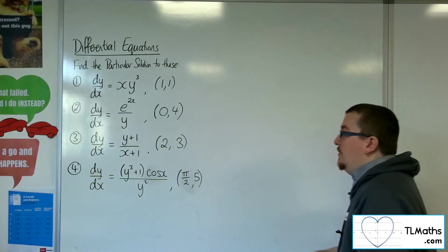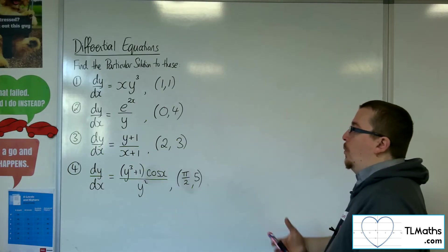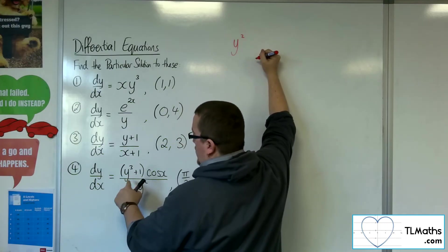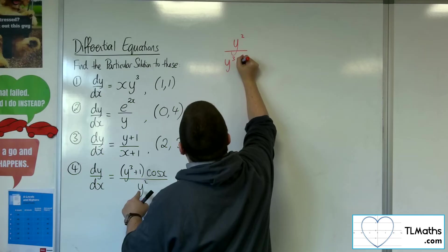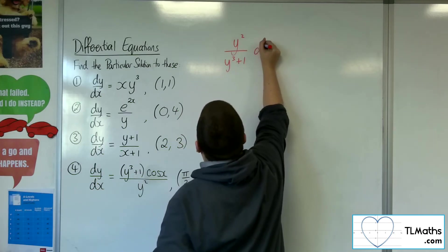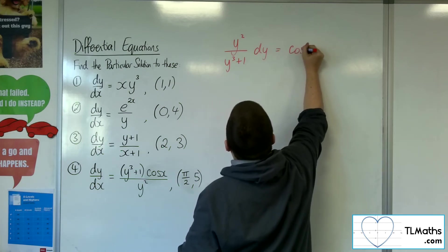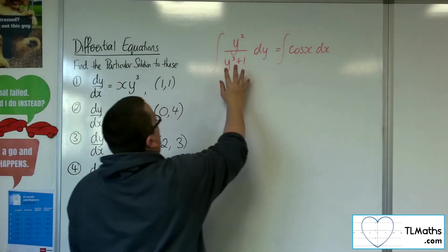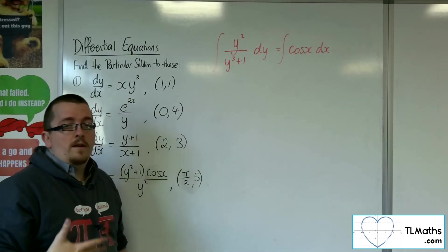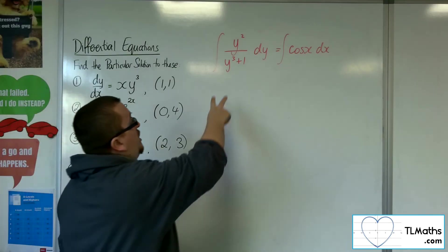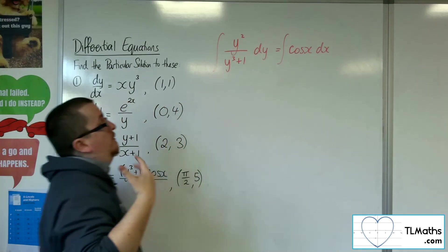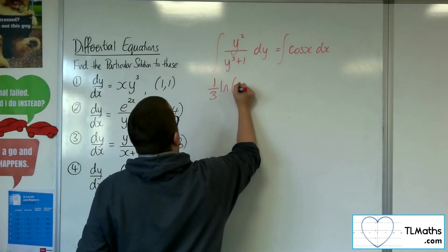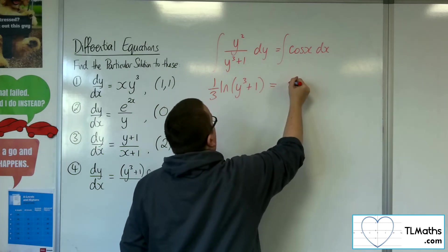Number 4. dy/dx equals y cubed plus 1 times cos x over y squared. I want to multiply both sides by the y squared, and I'll also divide both sides by the y cubed plus 1, in order to get those two terms onto the left-hand side. The dy stays where it is, the cos x stays where it is, but I multiply both sides by the dx. And then I'm ready to integrate. Now, the left-hand side, this is an example of integrating f prime over f. y cubed plus 1 differentiates to 3y squared, which is a multiple of what I've got in the numerator. I've got a third of what I need. So that would be 1 third log y cubed plus 1. The cos x integrates to sin x.